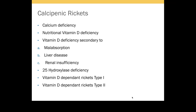Vitamin D deficiency could also be secondary to malabsorption, liver disease, or renal insufficiency. Very rarely, there is a 25-hydroxylase deficiency — a genetic condition where the liver conversion of vitamin D via 25-hydroxylase does not take place, leading to deficiency in active vitamin D, impaired calcium absorption, and resulting calcipenic rickets.